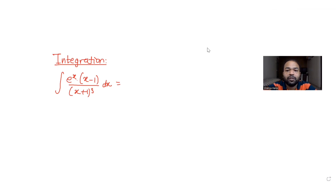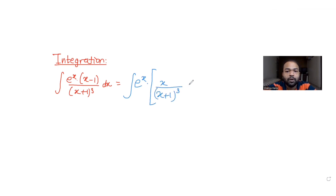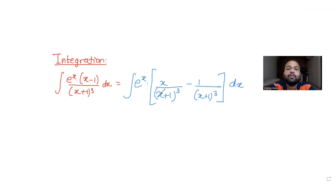Let's understand how to solve this. I can write this entire expression as e raised to x into x upon (x plus 1) the whole cube, minus 1 upon (x plus 1) the whole cube.